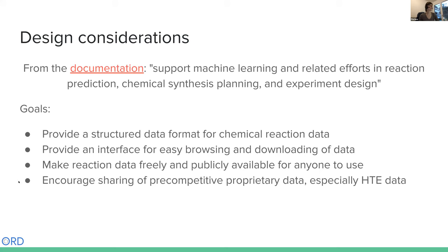On data quality: we're not necessarily requiring a link to a publication, but the review process itself is fairly rigorous. Every submission to the database will be manually reviewed to one degree or another. There are automatic validations to make sure the data isn't total garbage, but reviewers also go through and compare submissions with what's in a publication. If a publication is not available, we need to build relationships with those people to understand we're not just getting made-up data. It's not going to be perfect, but it's something we can improve over time.